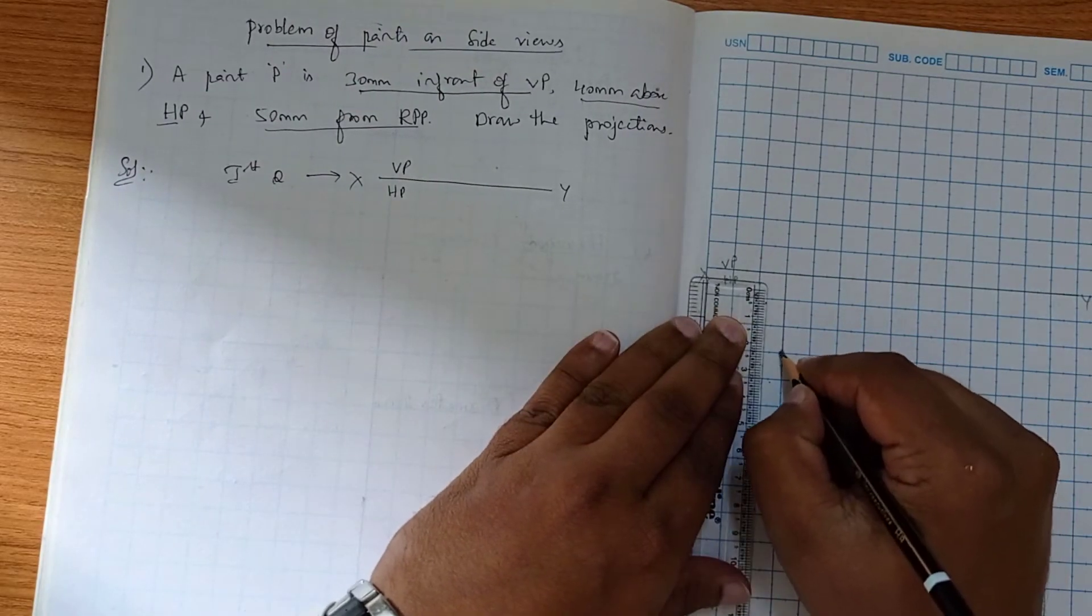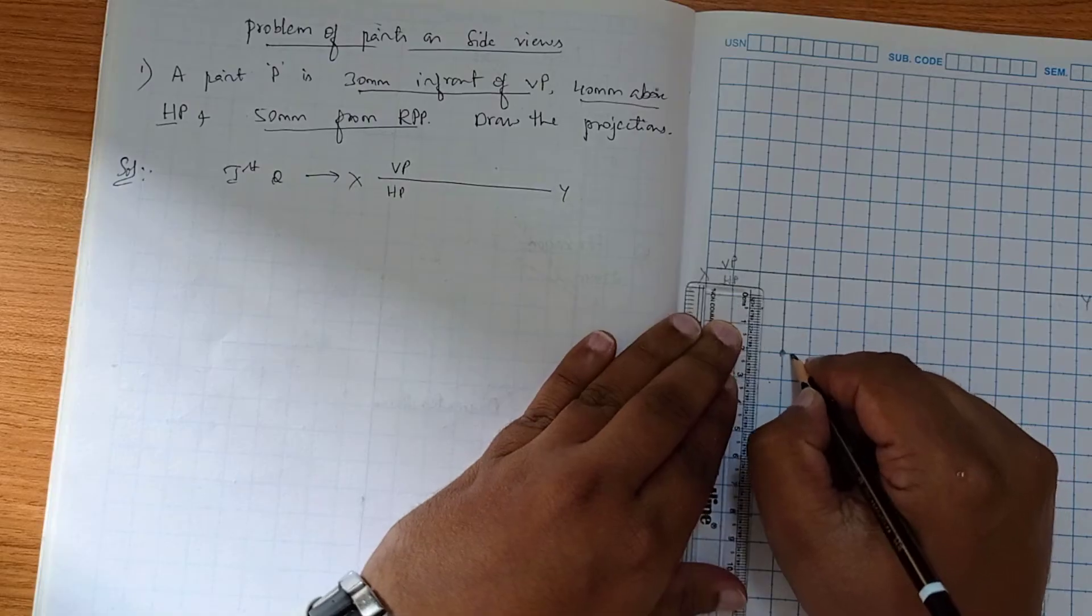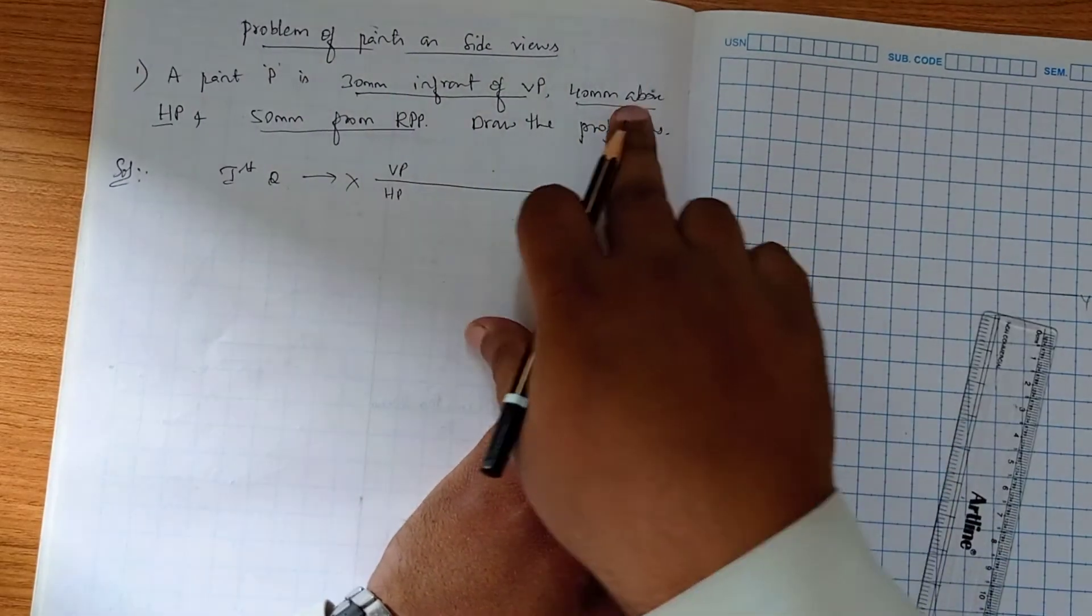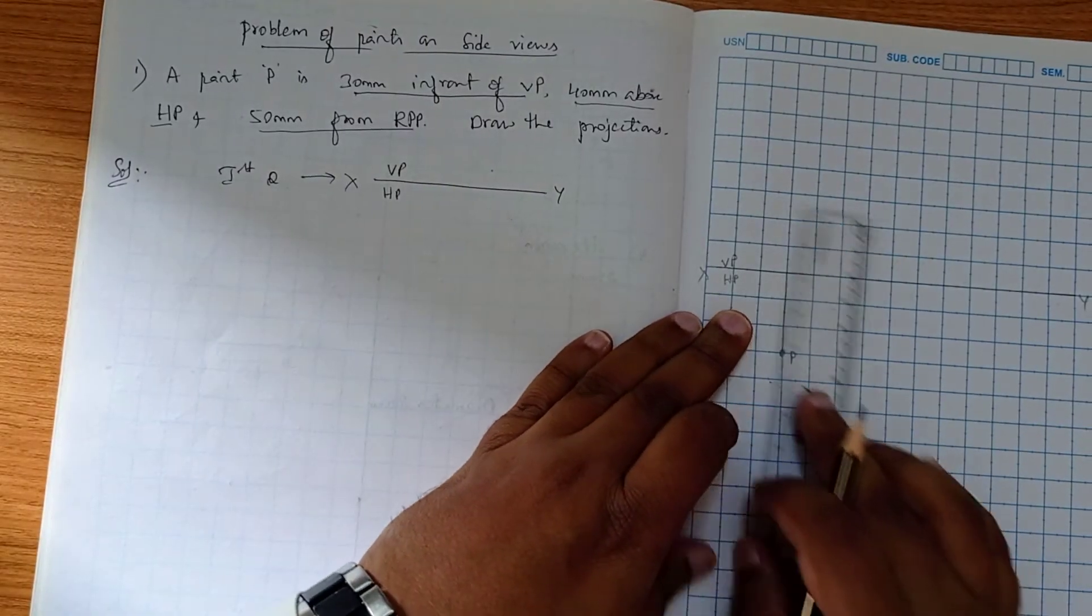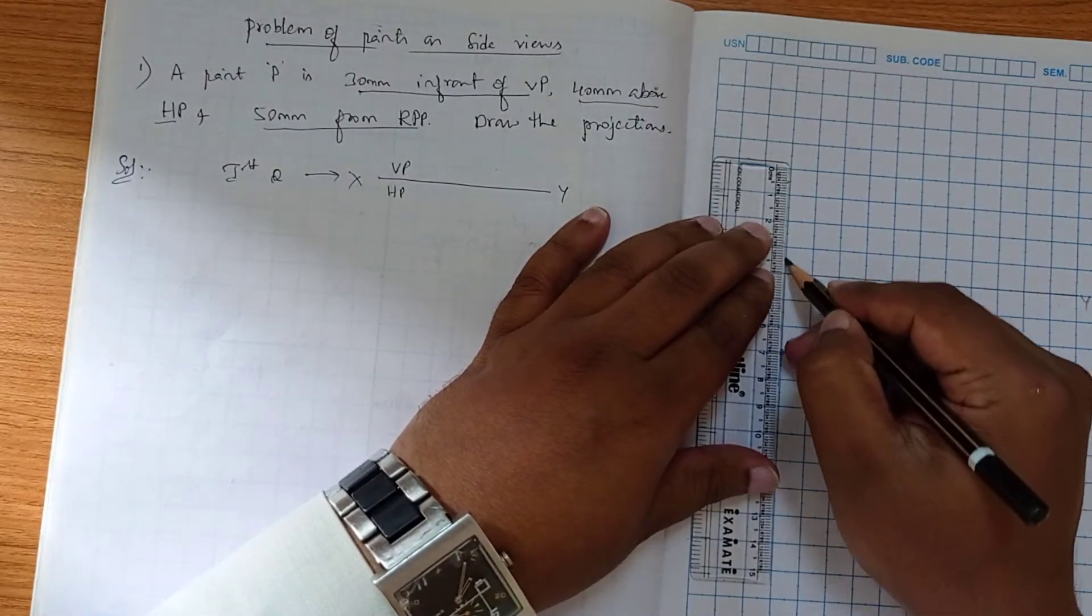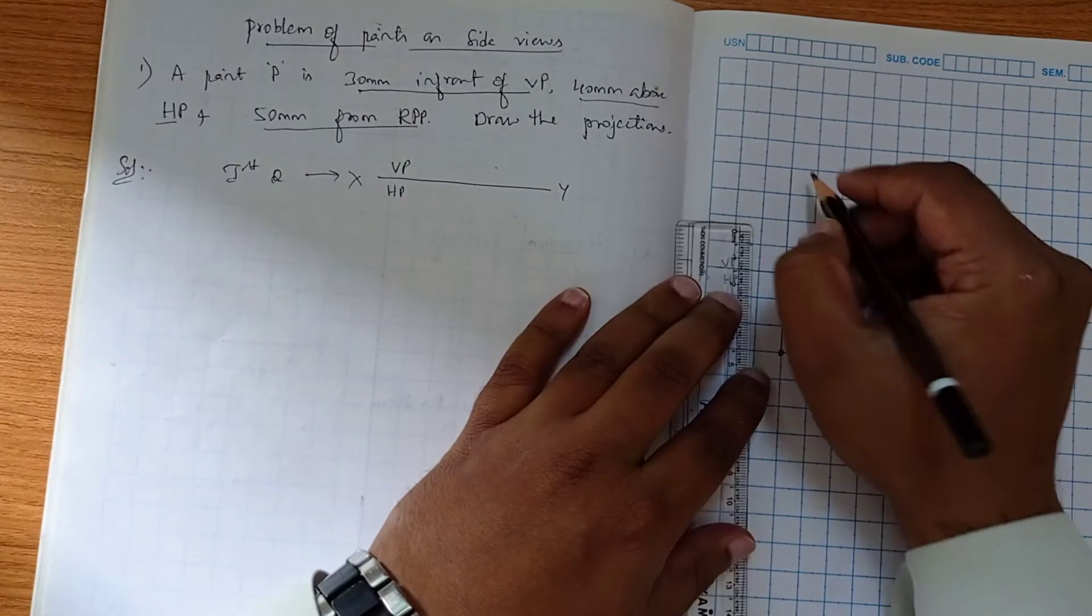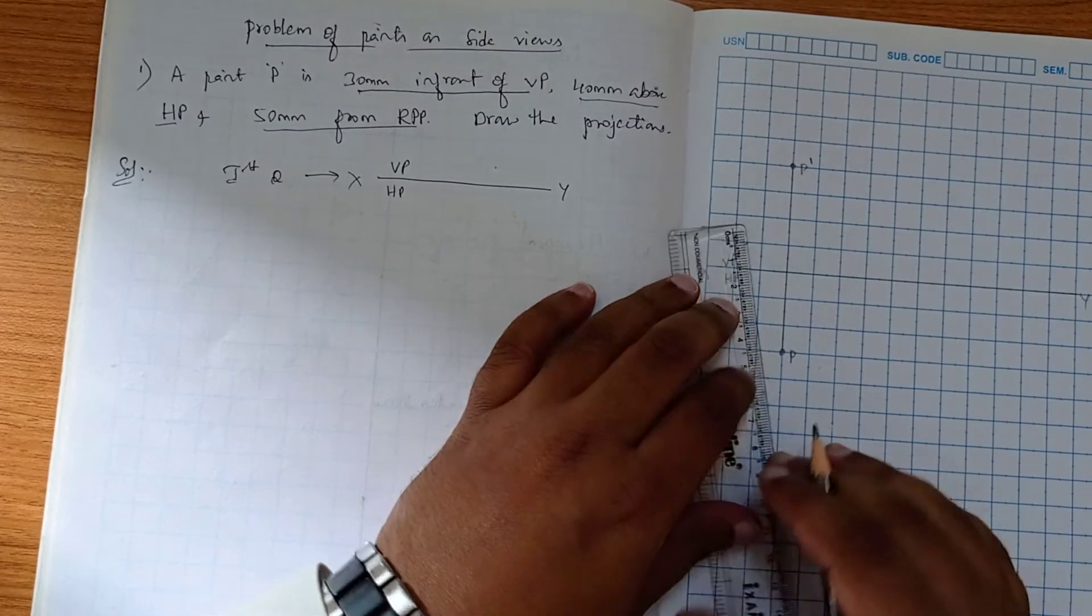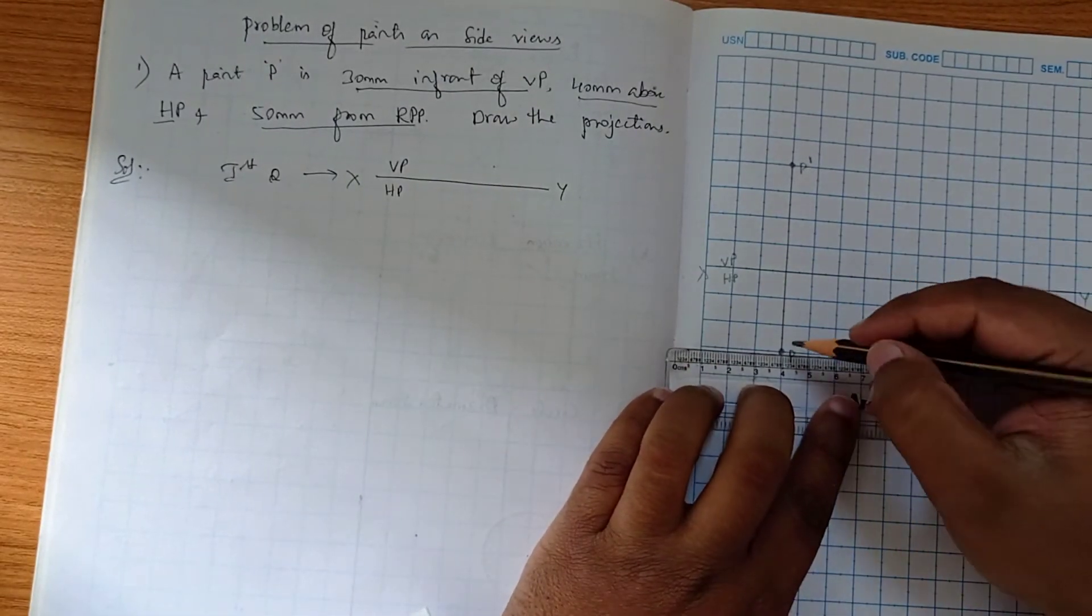Similarly, 40mm above HP means it is our front view. It is four boxes, and you put a point. We will use this P dash.